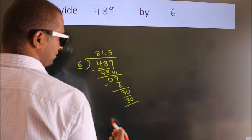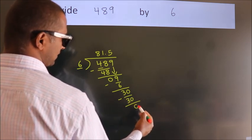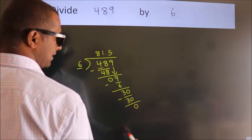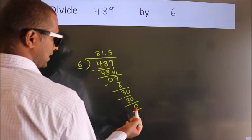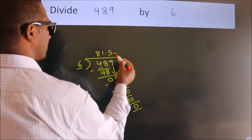Now we subtract and get zero. Here we got remainder zero, so this is our quotient: 81.5.